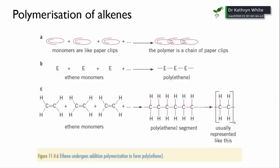The final type of reaction of alkenes we're going to look at is polymerization. From an industrial point of view, this is a massively important reaction because we use so many plastics these days.